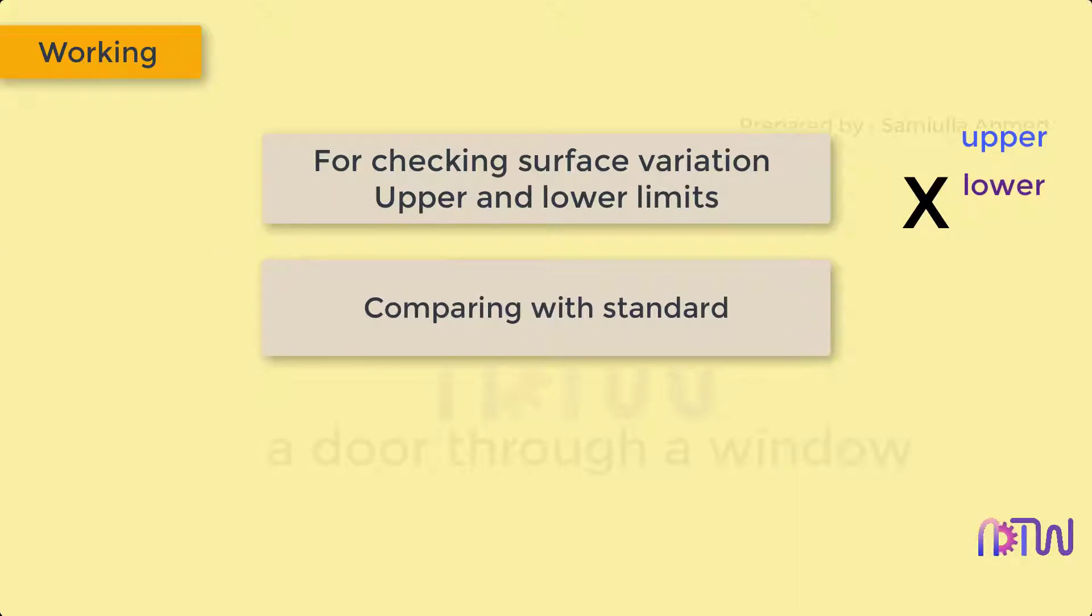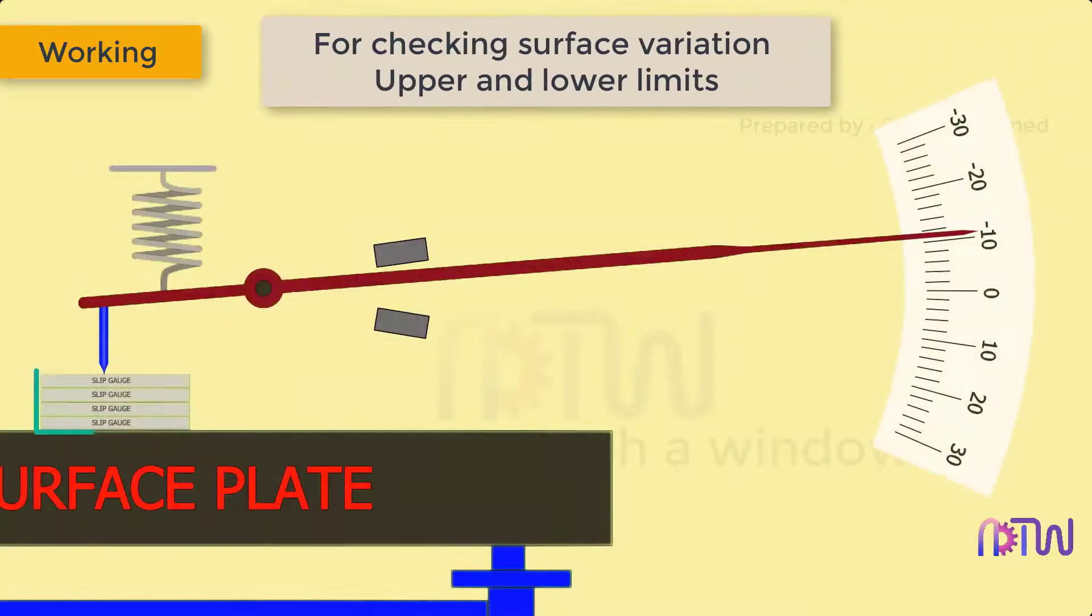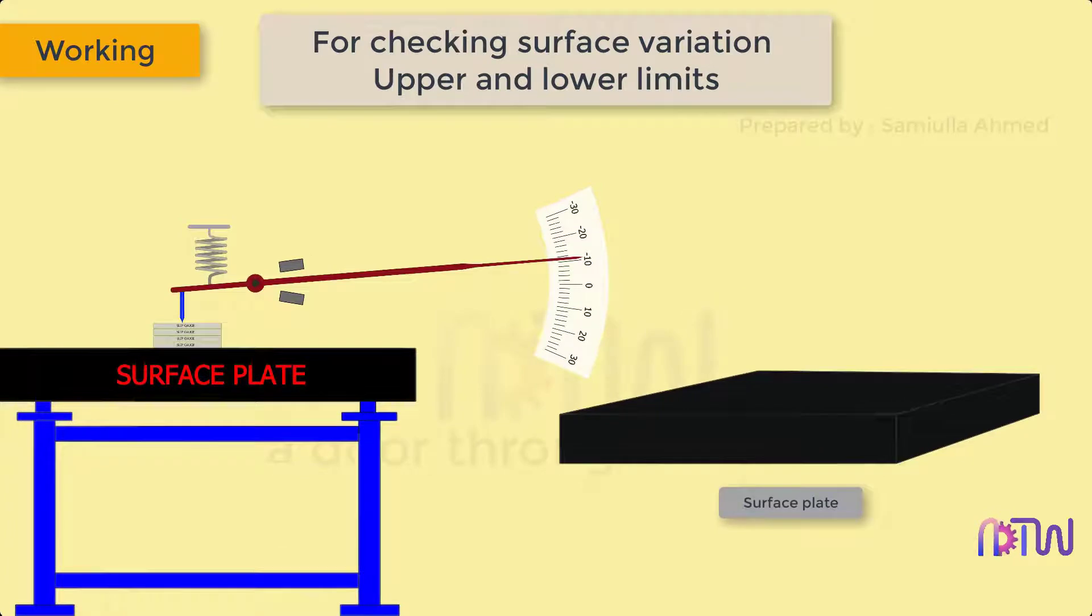In this video we will see both methods. First, a pile of slip gauges of standard dimension is placed on the surface plate below the plunger. What is a surface plate? A surface plate is a solid flat plate used as the main horizontal reference plane for precision inspection, marking out, and tooling setup.